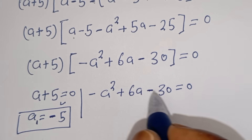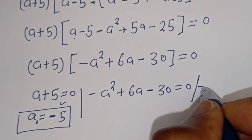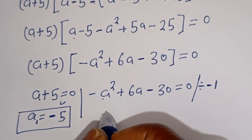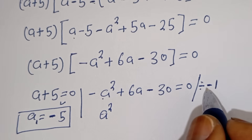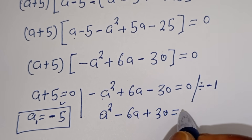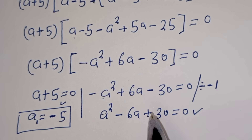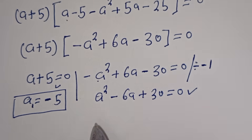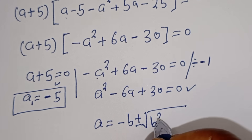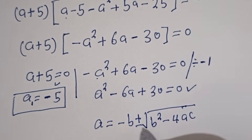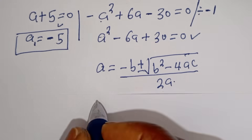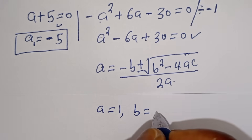From Case 2, we have minus A squared plus 6A minus 30 equals 0. Dividing all through by minus 1 gives A squared minus 6A plus 30 equals 0. This is a quadratic equation which can be solved using the quadratic formula: A equals minus b plus or minus square root of b squared minus 4ac, divided by 2a. Here a equals 1, b equals minus 6, and c equals 30.